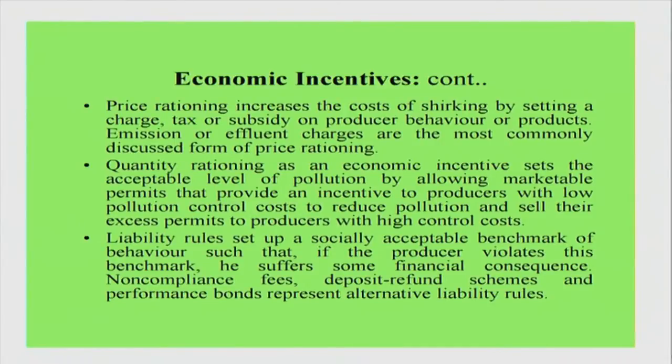Emissions or effluent charges are examples of price rationing — you try to influence the cost to the producer, who will tend to pass it on to buyers. Taxes on commodities and product charges are examples here: paying a tax on oil, paying additional duty on cigarettes. There are number of product charges that are very popular around the world, including taxes on oil in other countries as well.